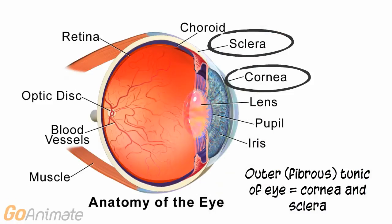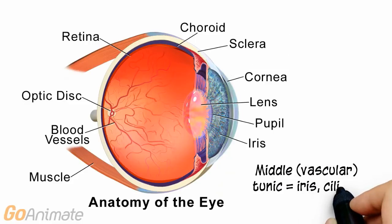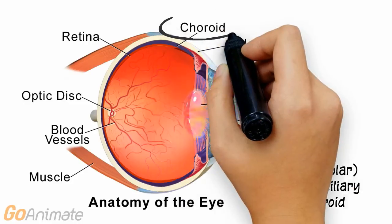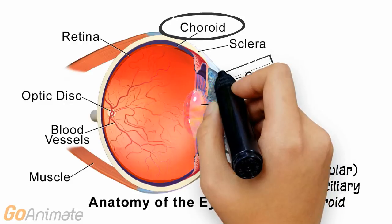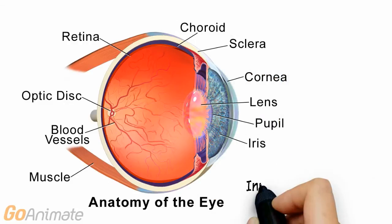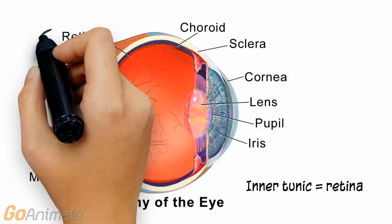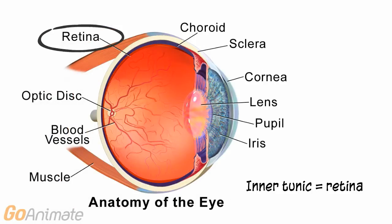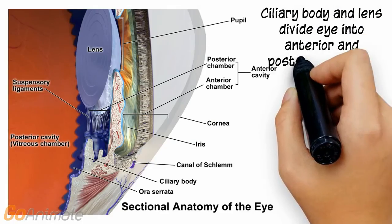The structure of the eye can be described in three layers. The outer or fibrous tunic consists of the transparent cornea and opaque sclera. The middle or vascular tunic consists of the iris, ciliary body, and choroid.